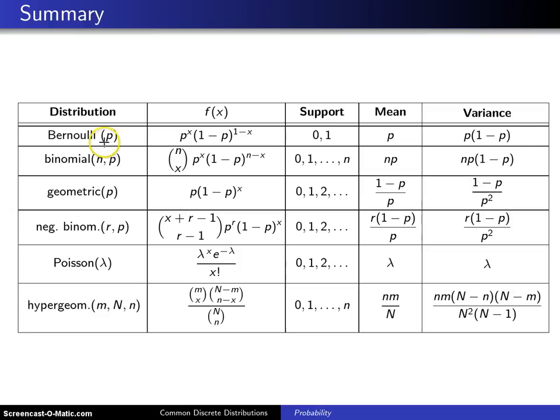Now the Bernoulli distribution leads to something which is known as a Bernoulli trial, and those Bernoulli trials lead to the next three distributions, namely the binomial, the geometric, and the negative binomial.